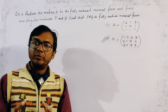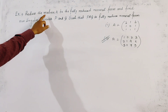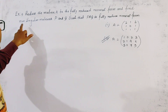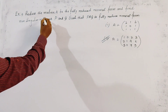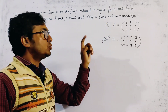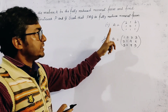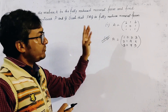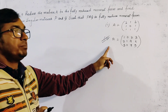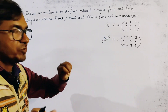This is a very important problem from matrix algebra. The problem is to reduce the matrix A to fully reduced normal form and find the non-singular matrices P and Q such that PAQ is the fully reduced normal form. Two problems are given here. We already solved the second problem in the previous class, so we discuss here only the first matrix.